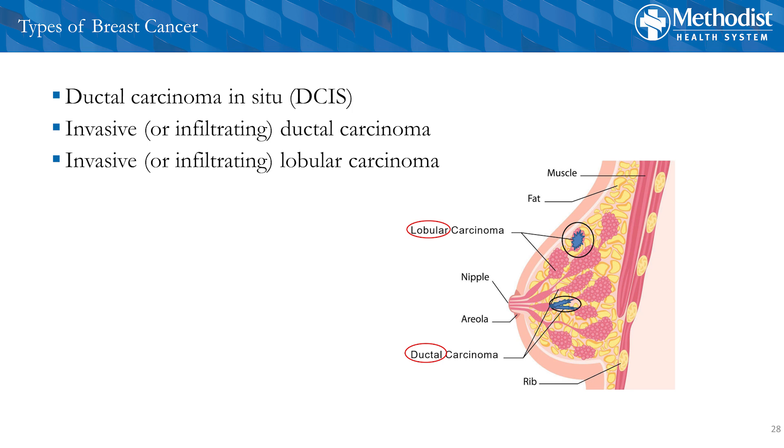Now you might ask, where's lobular carcinoma in situ in this? Even though lobular carcinoma in situ has the word cancer in it, it is not a cancer. Lobular carcinoma in situ is actually a high-risk lesion that we can find on biopsy, and it does increase a woman's risk of breast cancer, but it is not a cancer. Why do we keep the word cancer in it? There's really no reason for it. We've gone back and forth with the pathologists — actually in the UK they've stopped using that term — but it's a whole different grading system, and the pathologists in the US said we're just going to call it lobular carcinoma in situ, and here we are.